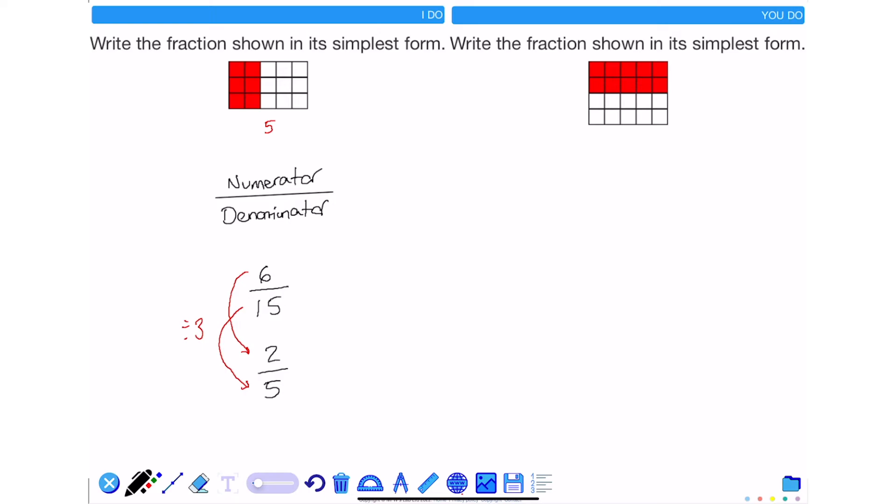With this question I have a 5 by 4 rectangle. 5 squares along, 4 squares up would mean that I've got 20 squares all together. I can also see that 10 of them are shaded in.